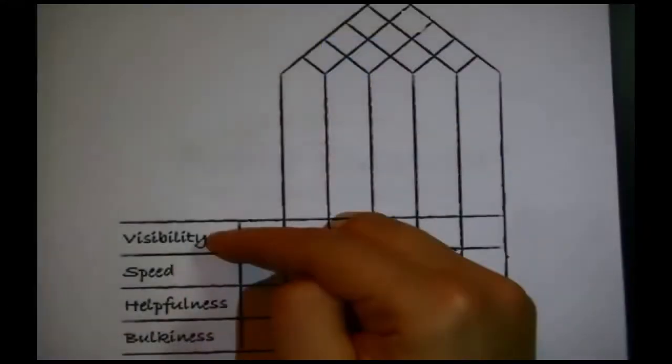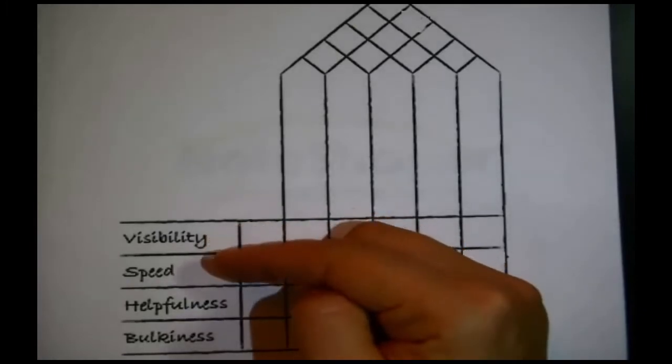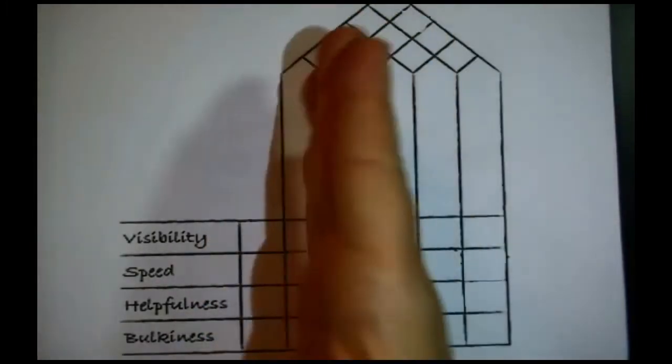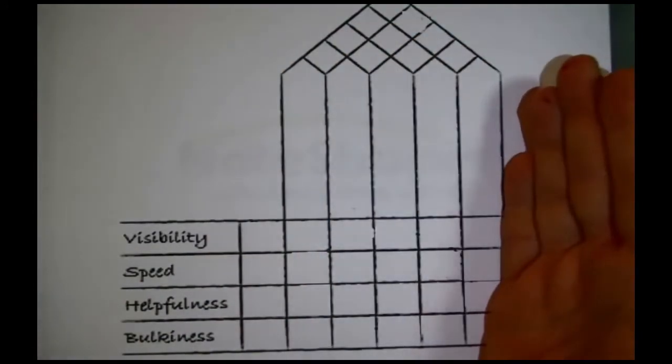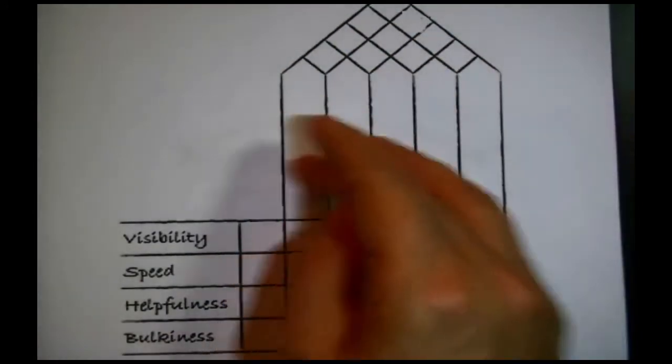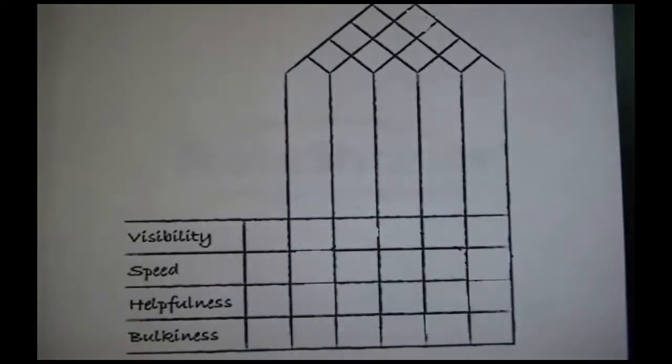Standard format in the house of quality. The rows are the customer value features. And you can see here, just to save us some time, they've already been pre-printed. It's the same thing as on the page before. Visibility, speed, helpfulness, and bulkiness. Meaning the columns in the house are going to be the technical specifications. That hasn't been pre-printed, so yes, we do have to fill that in. Alright, filling it in.